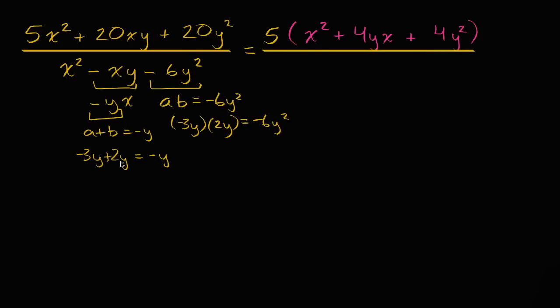And if it seems a little mysterious, how did Sal just all of a sudden get negative two y, or negative three y and positive two y, let me write an analogous quadratic here that only has one variable. If I were to write x squared minus x minus six, and I were to ask you to factor that out, you'd say, oh, okay. Well, this is going, I have negative three times negative two is negative six, and if I add them, well, that's going to be negative one. So you'd say, well, that's going to be x minus three times x plus two.